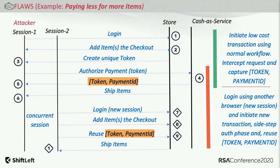The typical modus operandi of an attacker is to sense the request-response patterns. Unlike normal users, they install an intercept proxy and observe that information exchange. They discover an interesting parameter — a token — that is exchanged. This token implies that after buying items and being redirected to a payments provider like PayPal, Stripe, or Venmo, you are authorized to conduct that transaction and a token is returned. This token is a composite of your payment and a unique identifier, and given authorization, the next step is to ship the items.